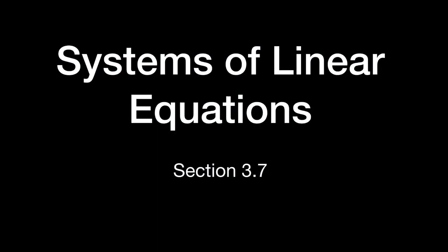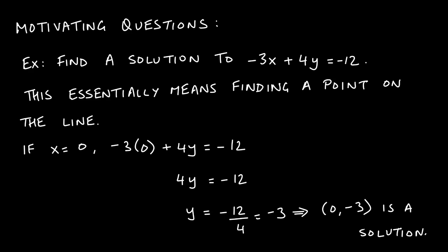Welcome to section 3.7. In this section we'll talk about systems of linear equations. Here's a motivating example of a problem we've done before: find a solution to the equation negative 3x plus 4y equals negative 12. This meant we just needed to find a point on this line, because points on the line are solutions to this equation.